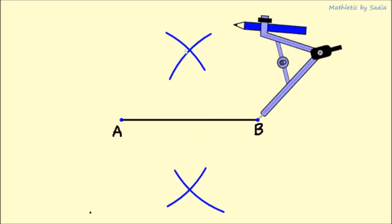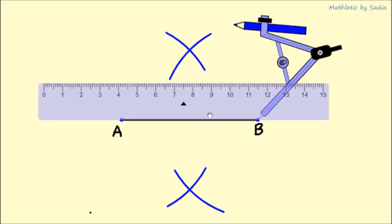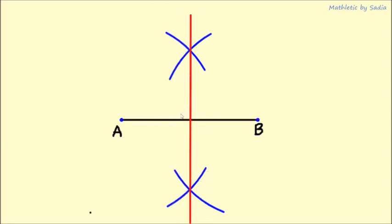As we can see, we have intersection points. We just need to join these two intersecting points to get that line bisector.